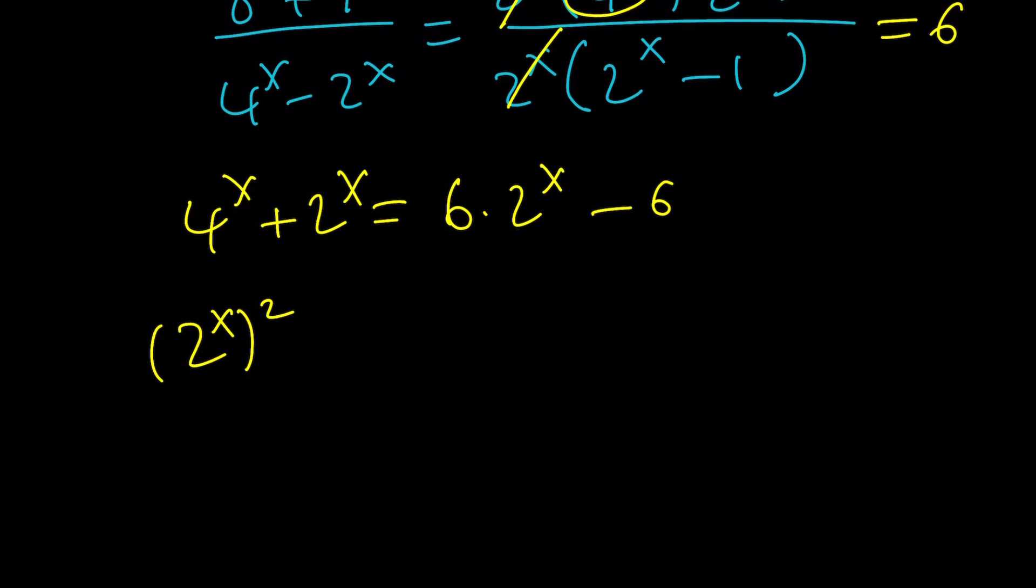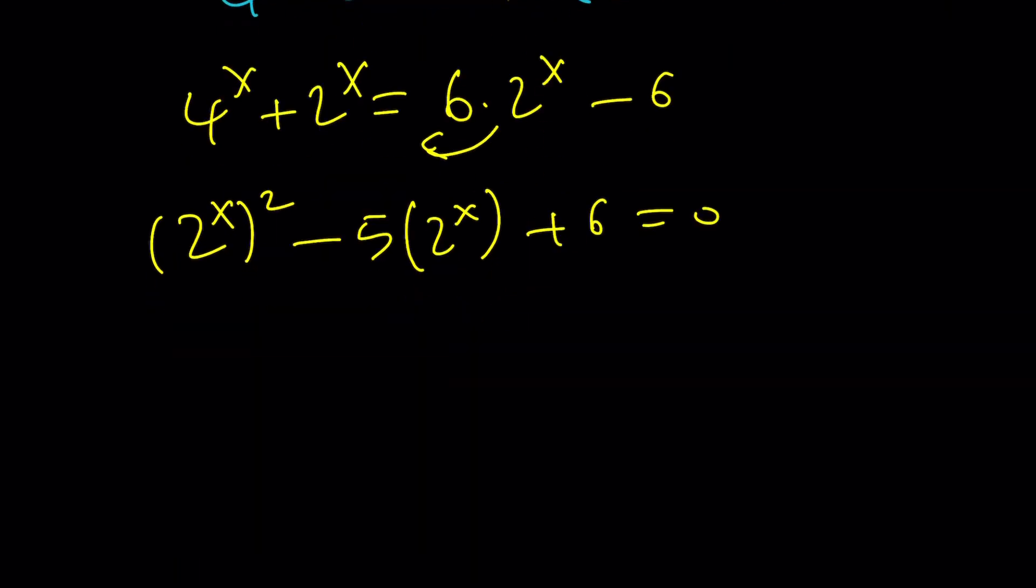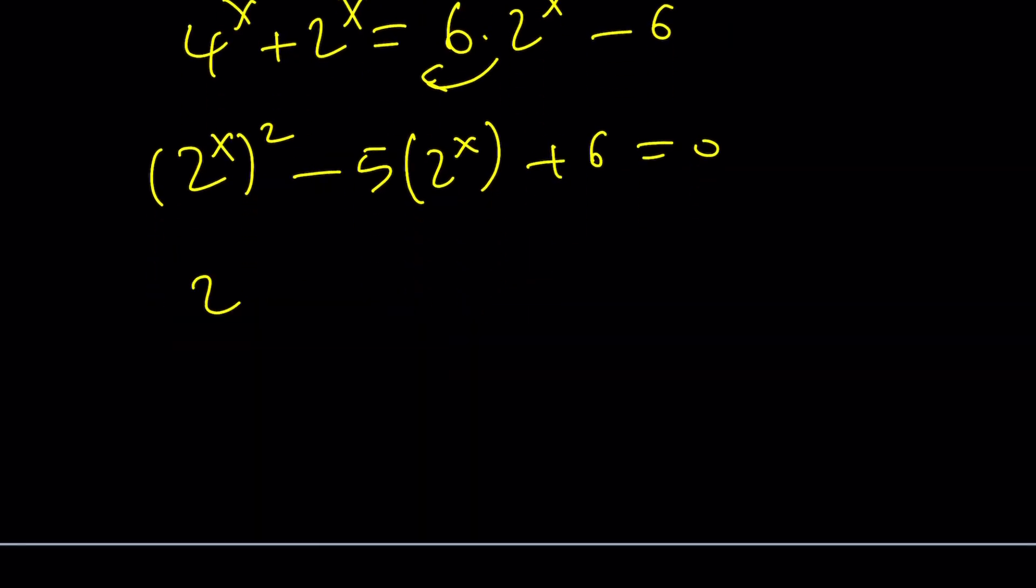4^x is (2^x)^2. So, let's write it that way. Bring the 6 times that minus 5 times 2^x plus 6 equals 0. And, again, this is factorable as a trinomial as (2^x minus 2)(2^x minus 3) equals 0. Set each factor equal to 0, and you'll get the exact same solutions as before.